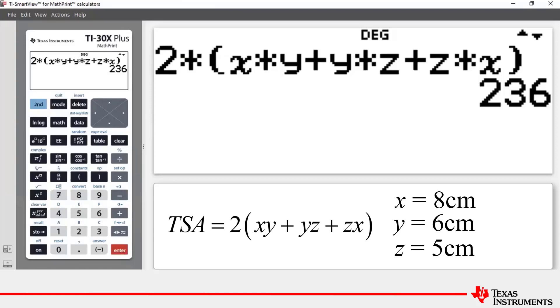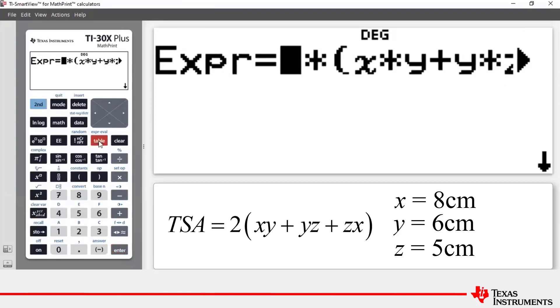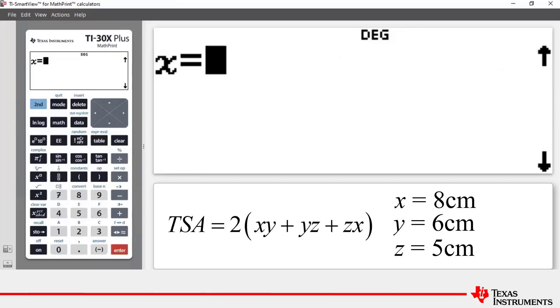Now if we go back to our expression evaluation feature by pressing second table and press enter, if we were asked to find another total surface area of a different cuboid we could do it straight away.